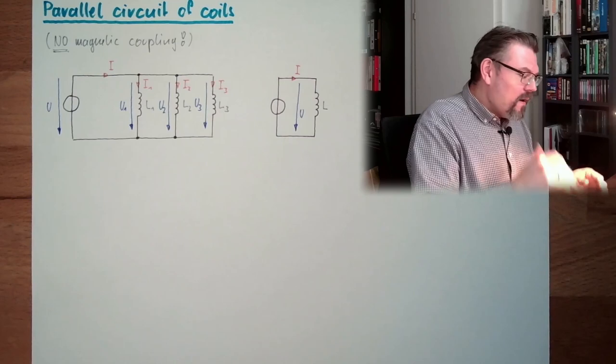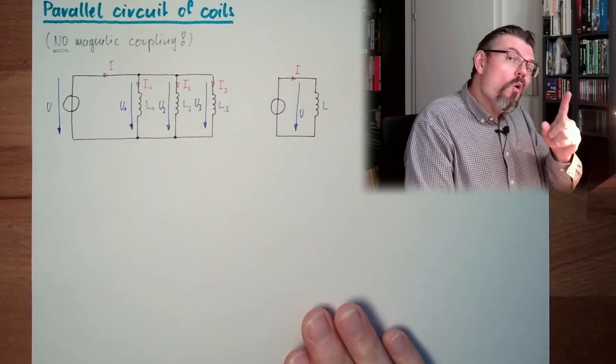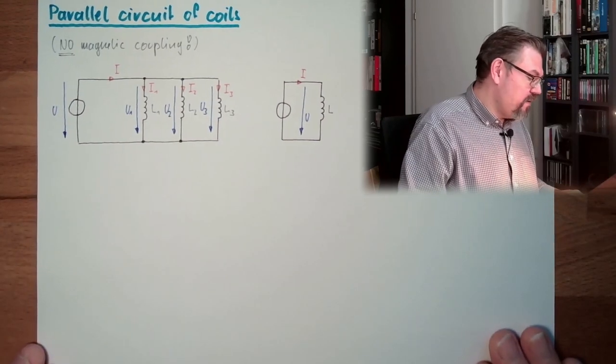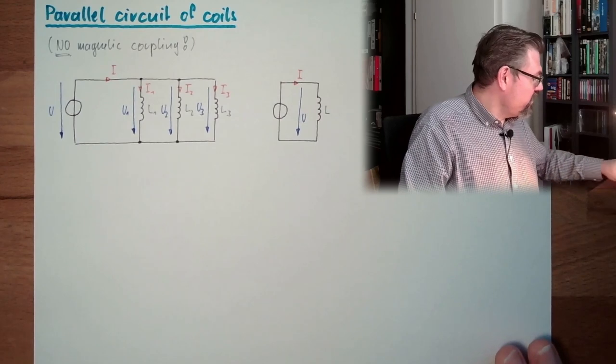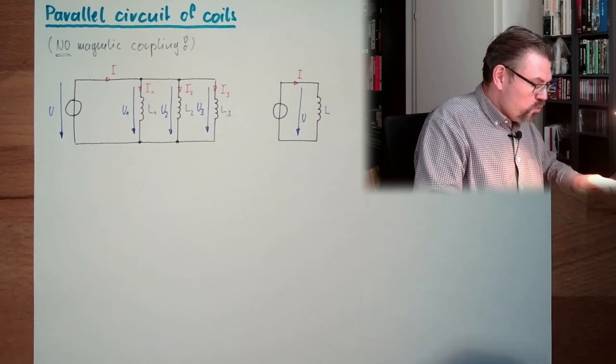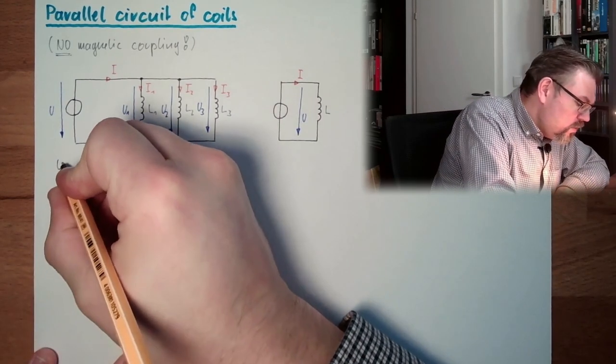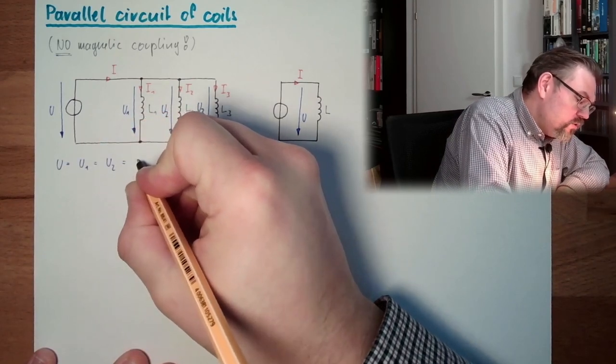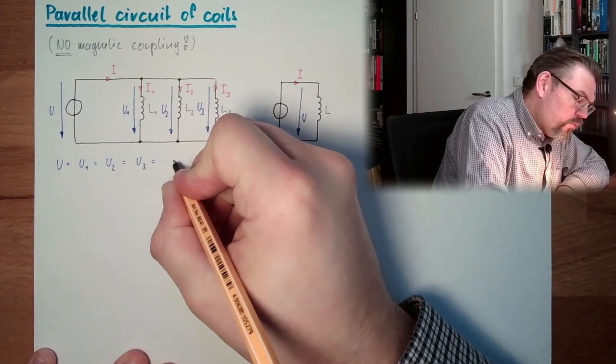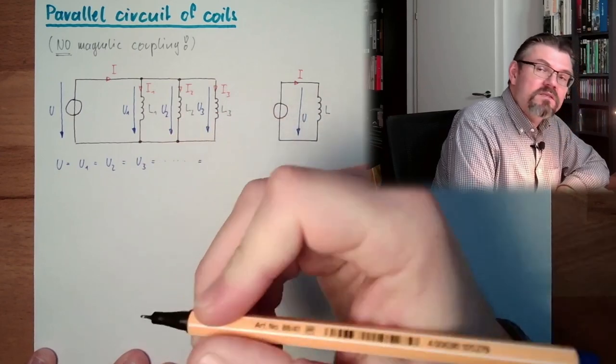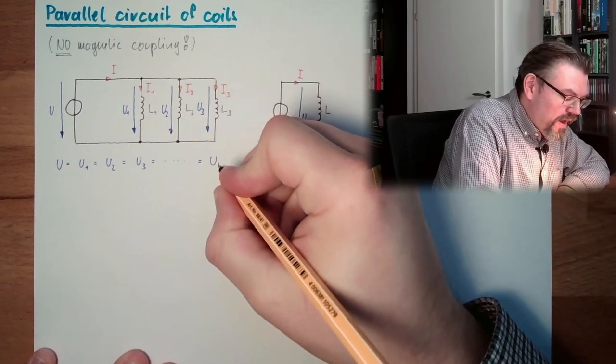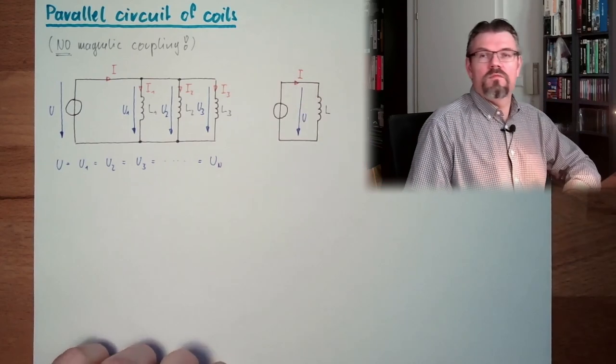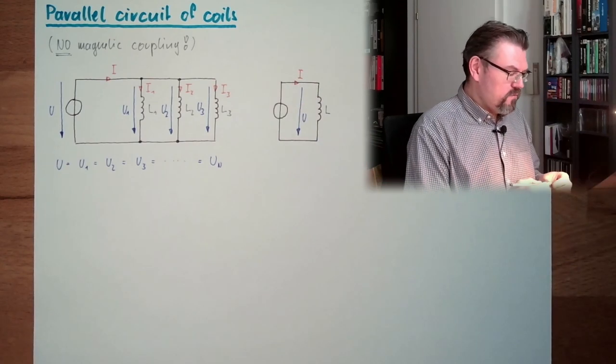So, parallel circuit, all voltages are the same. So I can immediately write here U equals U1 equals U2 equals U3 and so on. And I'm going to extrapolate this to N, undefined number N. It's always the same.